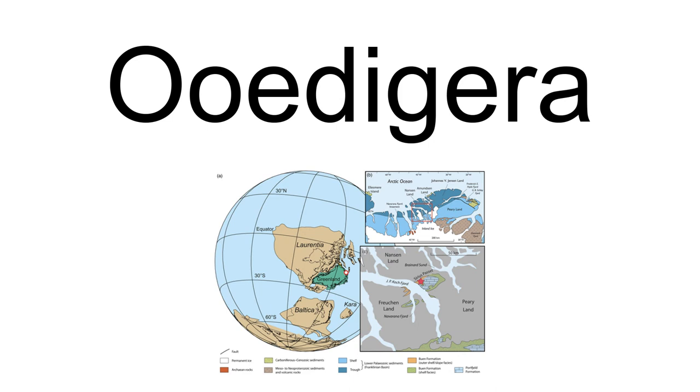Oedigera Pili is an extinct Vetulicoleon from the early Cambrian of North Greenland. The front body was flattened horizontally, oval-shaped, likely bearing a reticulated or anastomosing pattern, and had five evenly spaced gill pouches along the midline.